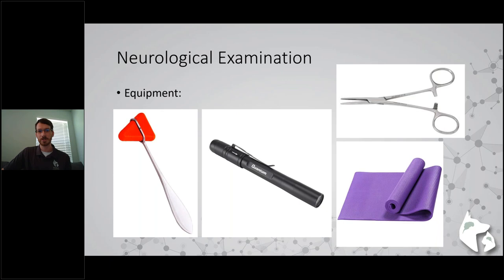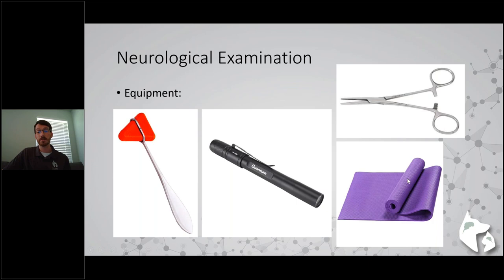A lot of people are afraid to do the neurological exam, but you don't need any special equipment. You don't have to have an MRI. Some good equipment you'll need is a flexor hammer to elicit spinal reflexes, a bright light to check for pupillary light responses, hemostats to provide a sharper stimulus when needed, and a non-slippery surface to evaluate patients who may have difficulty standing or walking. All of these are pretty simple things to have available.